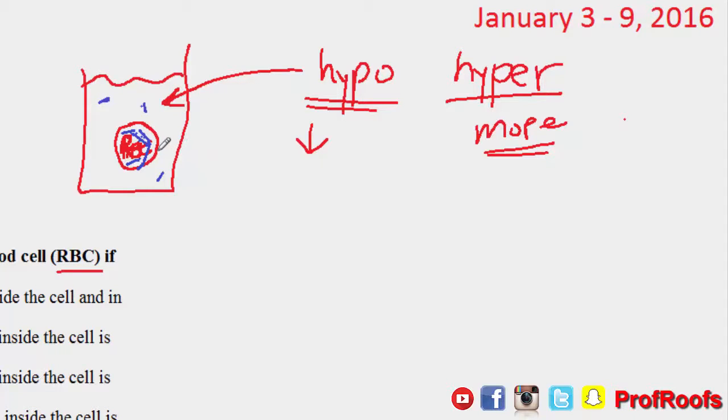So what's going to happen? Which way is the water going to go—is it going to go into the cell or out of the cell? Well, water flows to where there is a higher solute concentration, so it's going to flow into it, causing the cell to swell up.